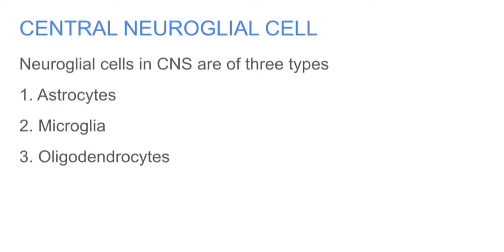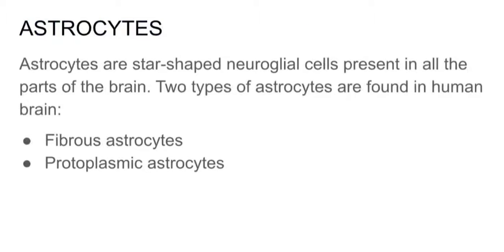Central Neuroglia cells: Neuroglia cells in the CNS are of three types. Astrocytes are star-shaped Neuroglia cells present in all parts of the brain. Two types of Astrocytes are found in the human brain: fibrous Astrocytes and protoplasmic Astrocytes.